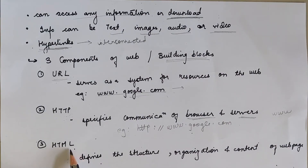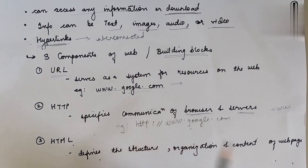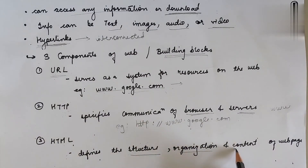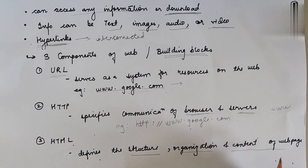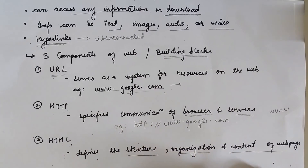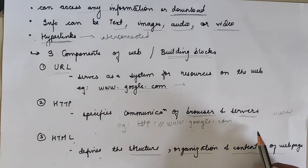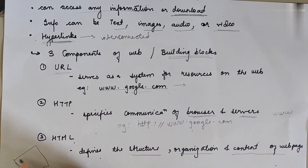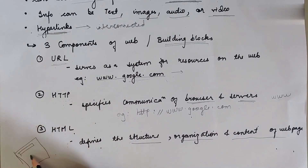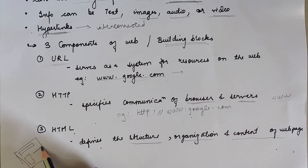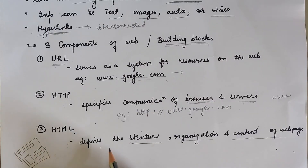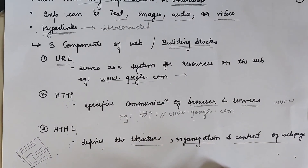The third main component is HTML — Hypertext Markup Language. This is very important because it defines the structure and organization of a particular page: how it is going to look and what content will be on that page. For example, you define what the title will be, where the image will be, and where the content will be. It is the organization of the web page — how it is actually going to look.